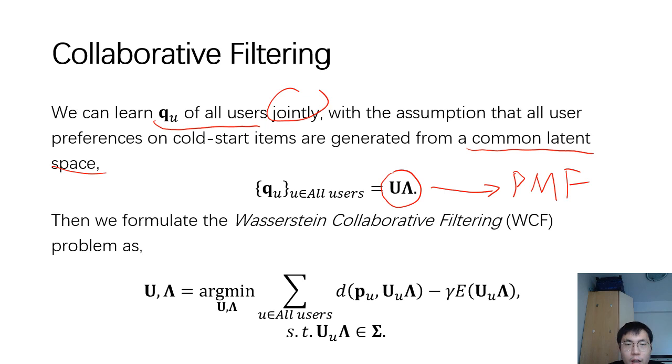Then we formulate the Wasserstein collaborative filtering problem as follows. We minimize the distance for all users and the preference of a user on cold start items is represented by a summation of latent vectors. Here, the constraint means that each row of U lambda should be a probabilistic distribution.